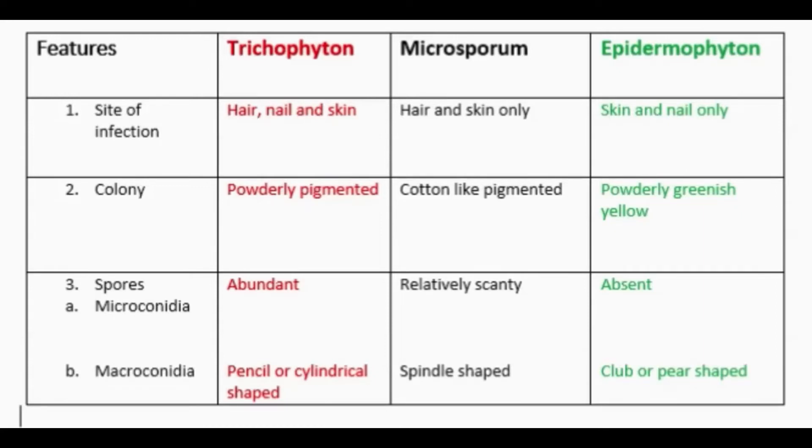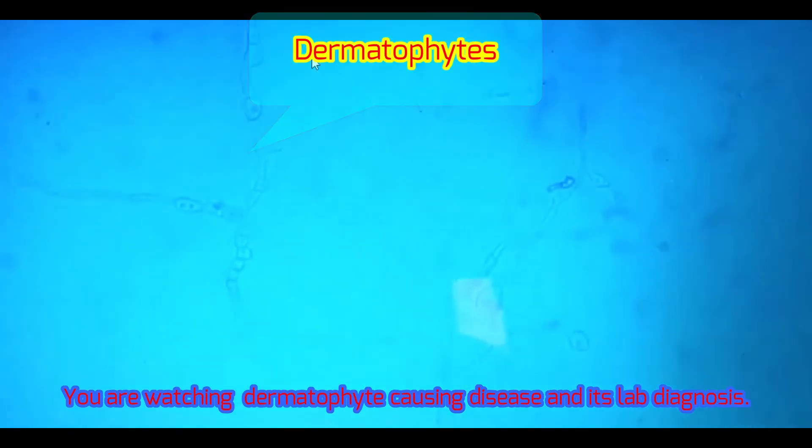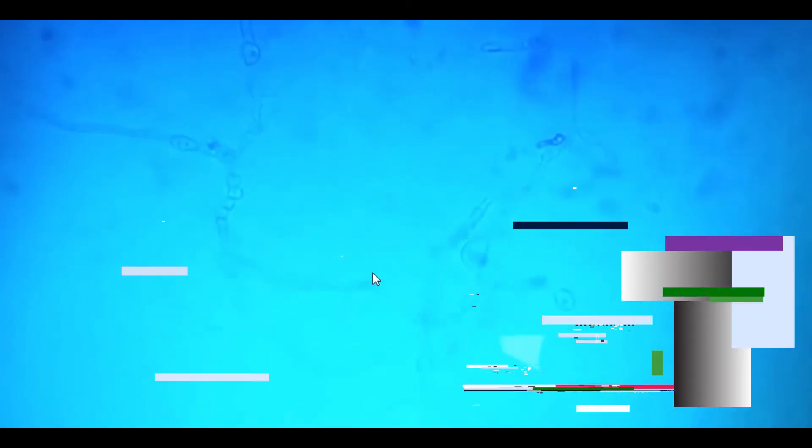Let's watch the clip for practical identification. Here we can see powdery greenish-yellow colonies. Now about spores — in this field, microconidia are lacking, no microconidia at all.